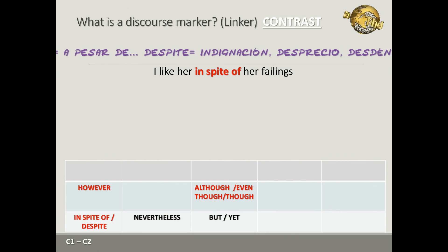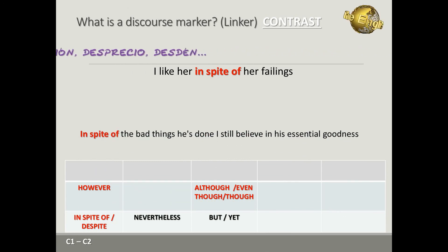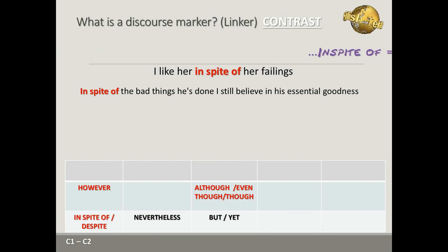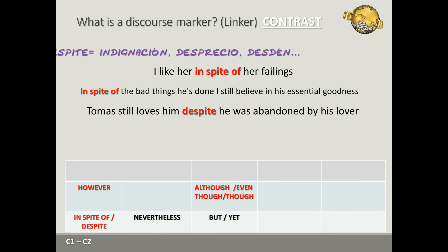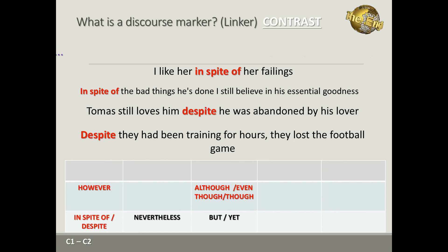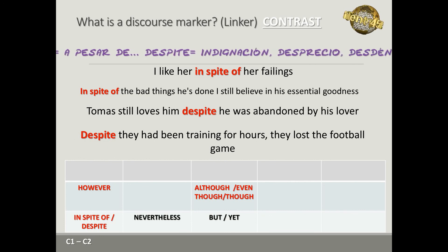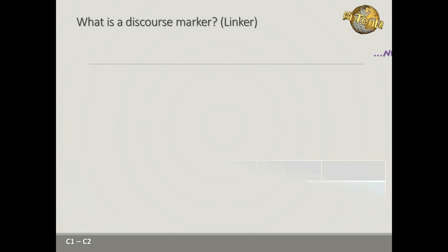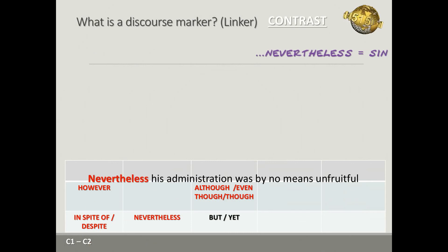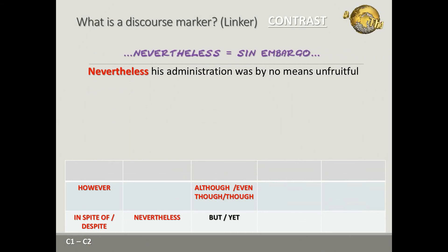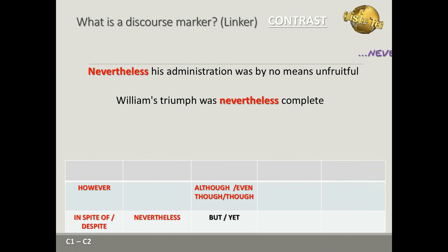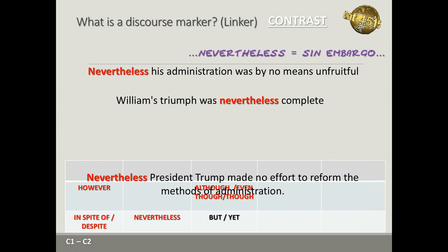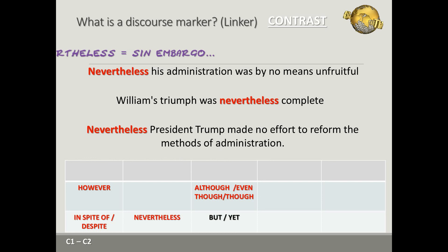Examples with 'in spite of': 'I like her in spite of her failings.' 'In spite of the bad things he's done, I still believe in his essential goodness.' Examples with 'despite': 'Thomas still loves him despite being abandoned by his lover.' 'Despite having trained for hours, they lost the football game.' Examples with 'nevertheless': 'He had a good time with his family; nevertheless, his administration was by no means unfruitful.' 'William's triumph was nevertheless complete.' 'Nevertheless, the president made no effort to reform the methods of administration.'